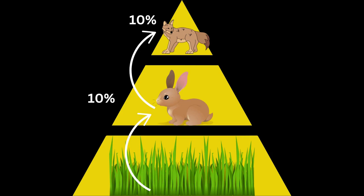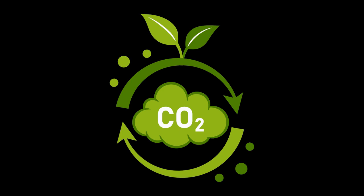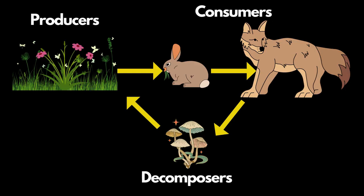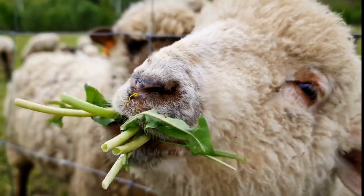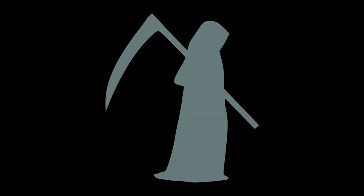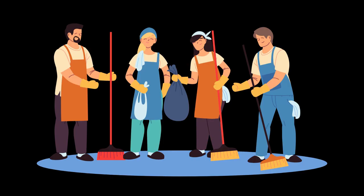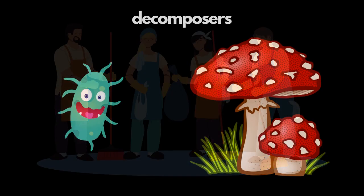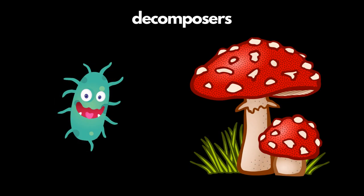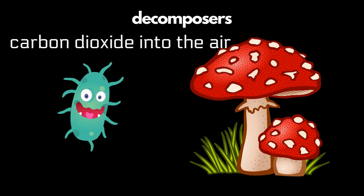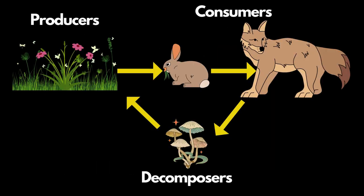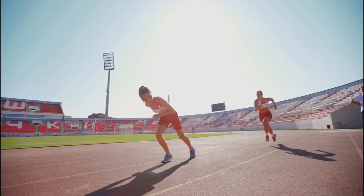On the flip side, matter cycles in an ecosystem. Producers, like plants, pull in carbon dioxide from the air and nutrients from the soil. Animals eat plants, gaining this matter for their growth. But what happens when organisms die? That's where decomposers, nature's clean-up crew, come in. Bacteria and fungi break down dead bodies, releasing nutrients into the soil and carbon dioxide into the air. And so, the cycle restarts, like an ecological relay race.